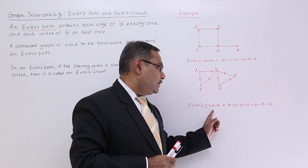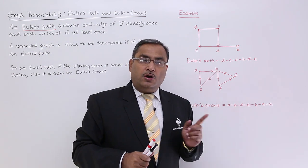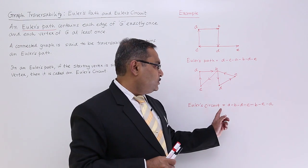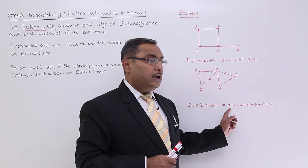That is known as Euler's circuit because it has traversed all the edges once and all the vertices at least once. In this way we are getting this particular Euler's circuit.